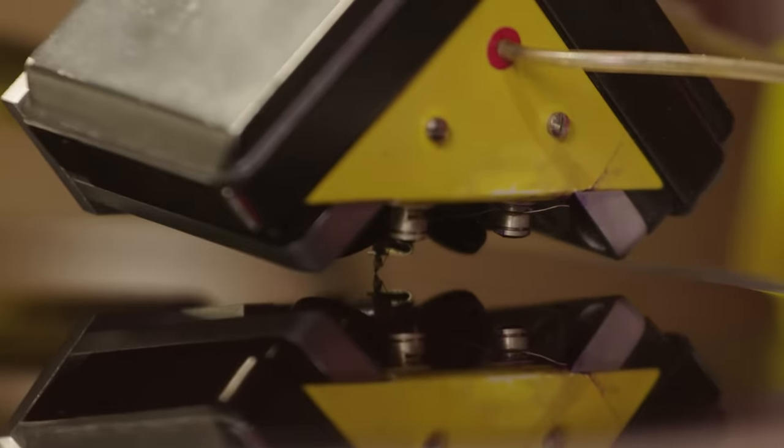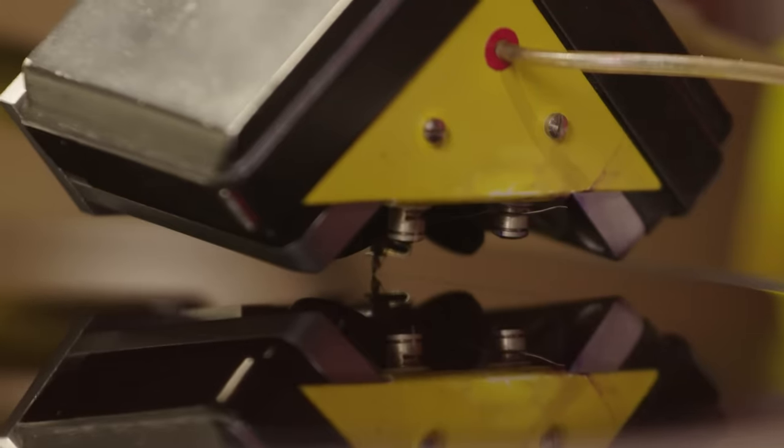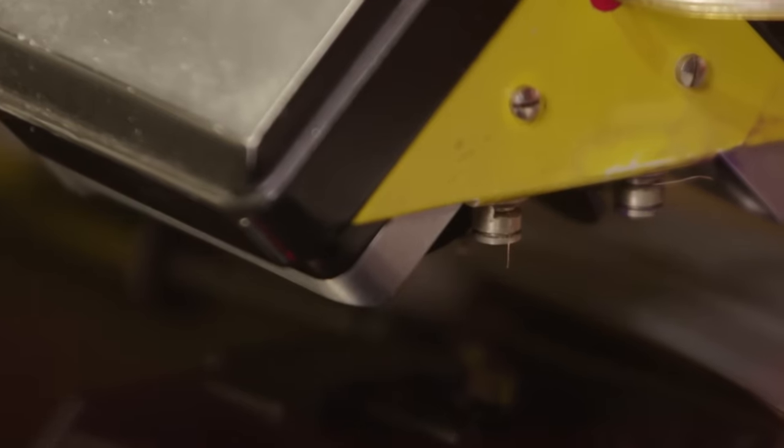The lathe is the machine that cuts the lacquer. This one is a 1974 VMS 70. They stopped making them in 1980. The stylus cuts the lacquer. It takes about two and a half hours to cut a record.